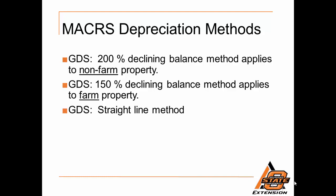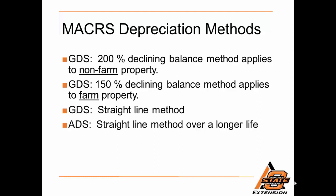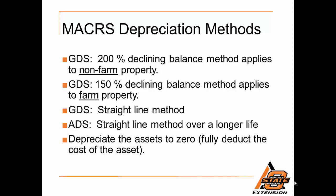Under the 150% declining balance system, we also have the straight line method as well as the ADS method, which is the longer life recovery period. In all of these methods, we depreciate the asset to zero — fully deducting the cost of the asset over that period of time.